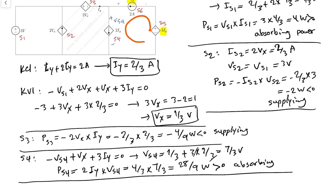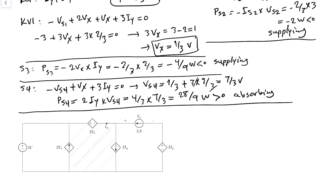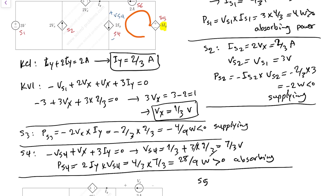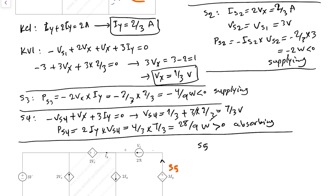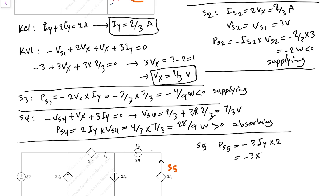For S5, the voltage is 3Iy and the current is 2A because it is in series with the current source. The current exits from the positive terminal, so Ps5 equals minus 3Iy × 2 equals minus 3×(2/3)×2 equals minus 4W, which is less than zero — so S5 is supplying power.